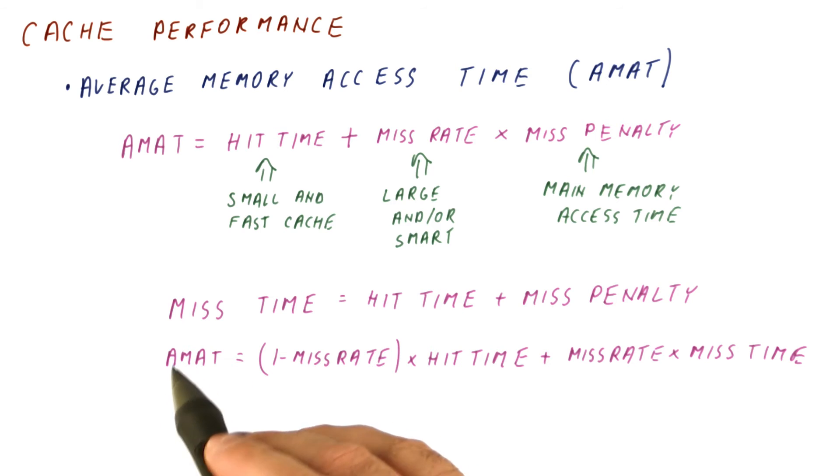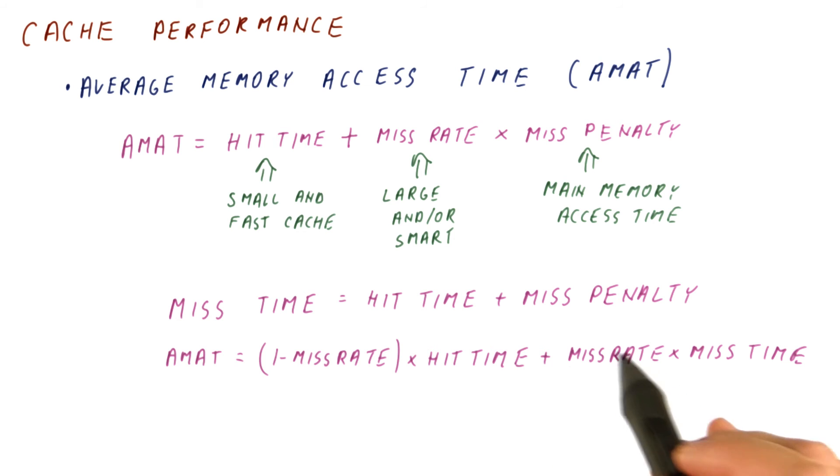So another way to write the AMAT expression would be to say that it is one minus miss rate times the hit time. So this is how often do we have the hits times the time for the hit, plus how often do we have the misses times the miss time.